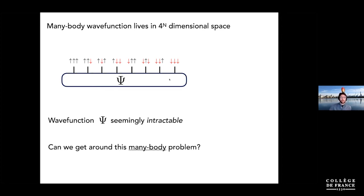This is one way to define the many-body problem: we're forced to work in an exponentially large space where you can't even begin the problem. You can't choose an initial guess for psi, or even store it on your computer, when it's this large.